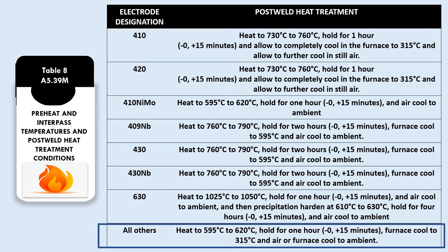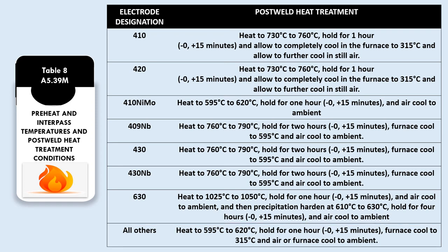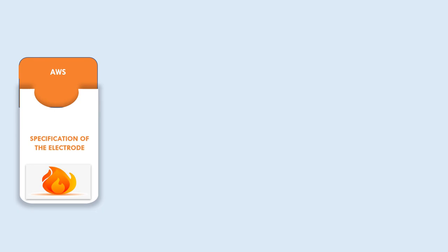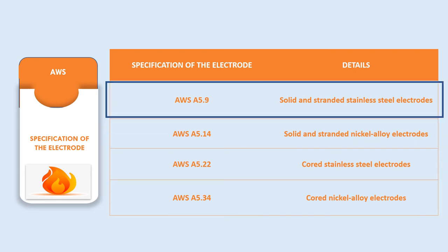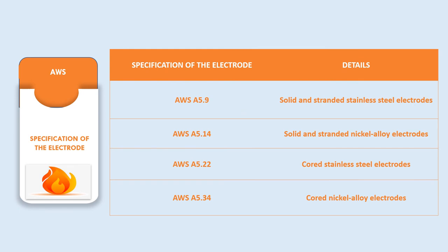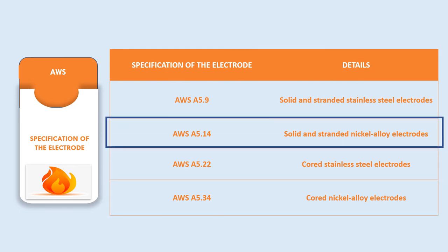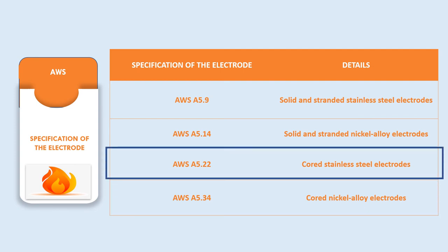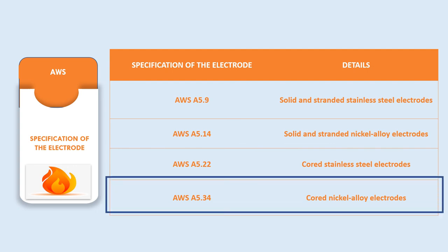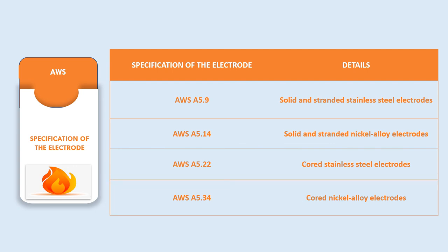There are AWS specifications for electrodes for stainless steel and nickel alloys that are helpful for reference. AWS 5.9 is for solid and stranded stainless steel electrodes; AWS 5.14 is for solid and stranded nickel alloy electrodes; AWS 5.22 is for flux-cored stainless steel electrodes; and AWS 5.34 is for flux-cored nickel alloy electrodes.